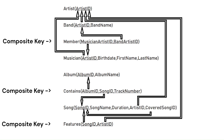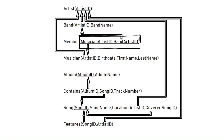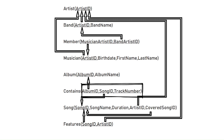The member, features, and contains tables have composite primary keys consisting of combinations of attributes. The member primary key is the two foreign keys of the musician's artist ID and the band's artist ID. The features primary key combines the foreign keys of song ID and artist ID. The contains table uses not just the foreign keys of album ID and song ID, but also track number in the composite primary key, on the off chance that a given album has the exact same recording twice in two different track numbers.